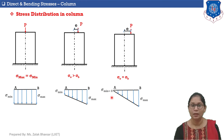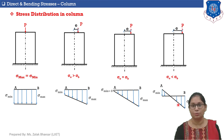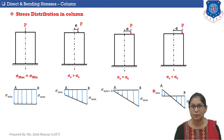Further shifting the eccentric load so that σ₀ becomes less than σB — direct stress is less than bending stress. In this stress distribution diagram, edge B has σmax, but edge A has σmin as negative, meaning face A of the column section is subjected to tensile stresses.